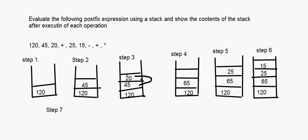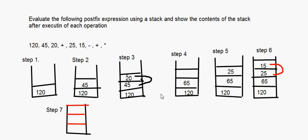Step 7: we have a minus sign. The top two elements are subtracted: 25 minus 15 equals 10. So the stack becomes 120, 65, 10.